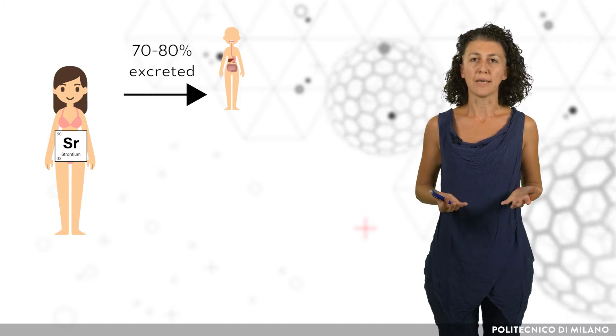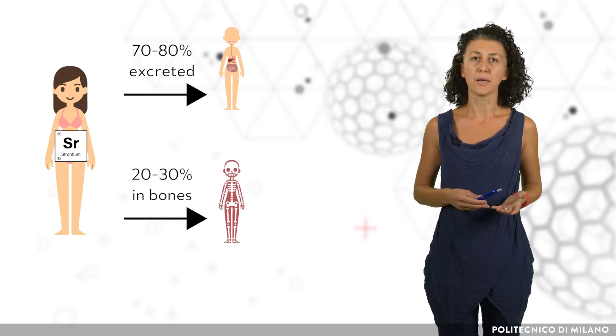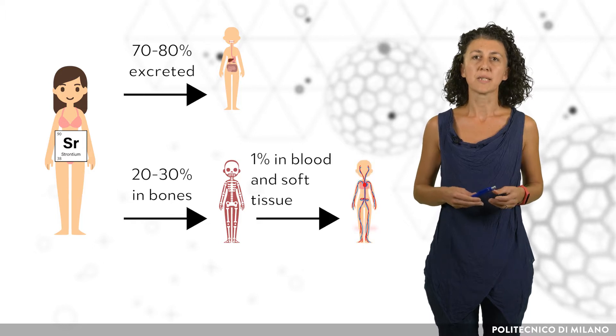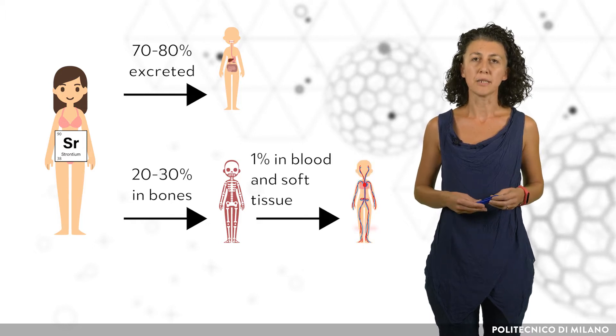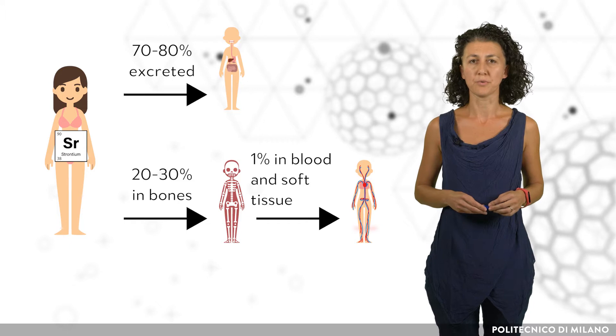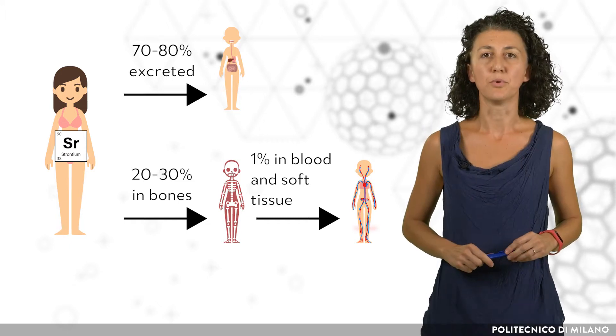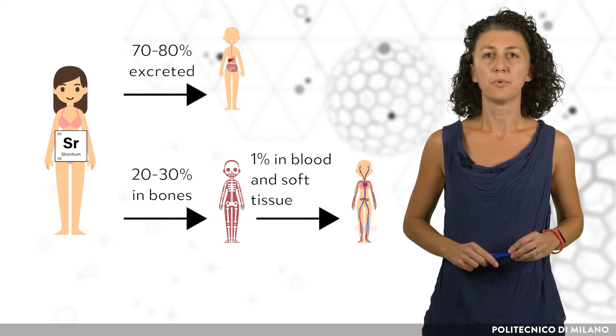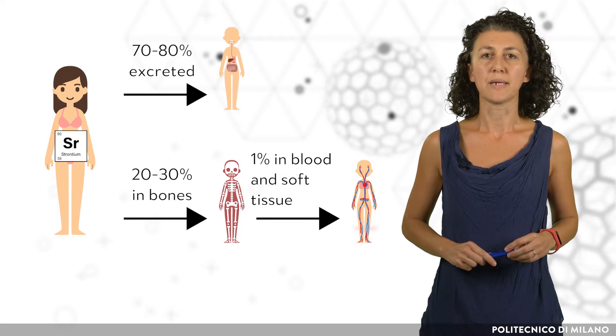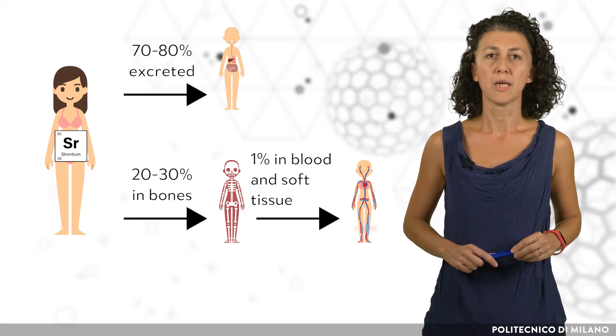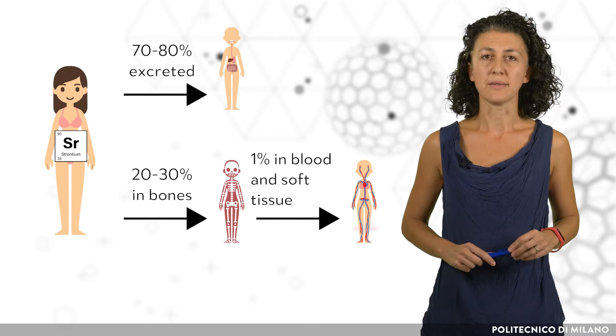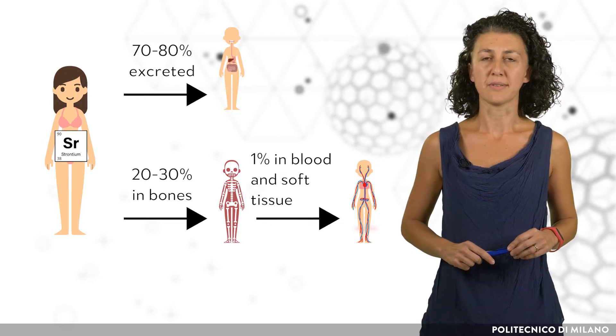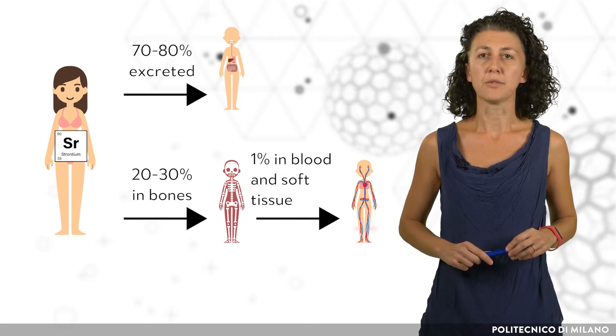Virtually all remaining strontium-90 is deposited in bones and bone marrow, with the residual 1% remaining in blood and soft tissues. Its presence in bones can cause bone cancer, cancer of nearby tissue, and leukemia. Exposure to strontium-90 can be tested by bioassay, most commonly by urinalysis.